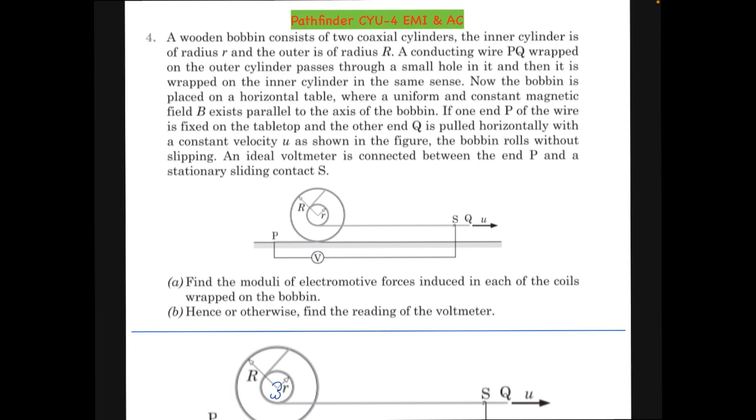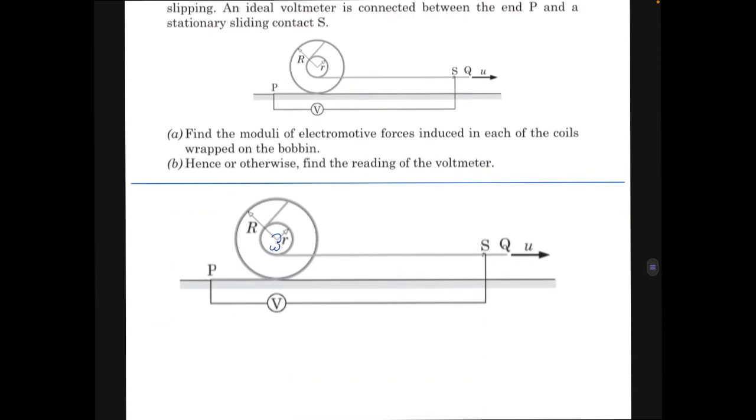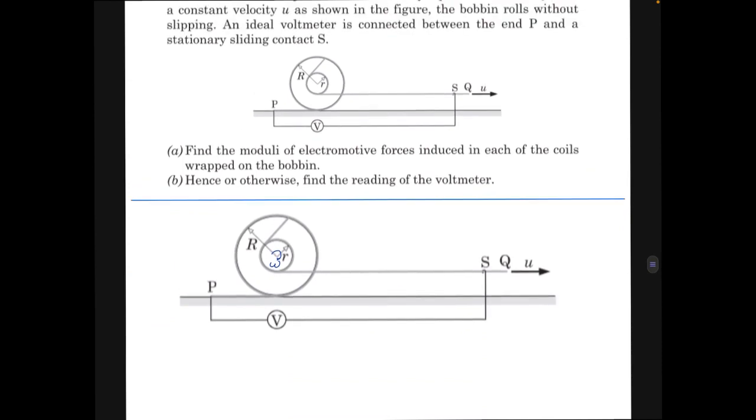Find the moduli of electromotive forces induced in each of the coils wrapped in the bobbin. Hence or otherwise, find the reading of the voltmeter. Basically, we have to apply Faraday's law, which states that the voltage generated will be d phi by dt, where phi is the flux due to the magnetic field through the coil.